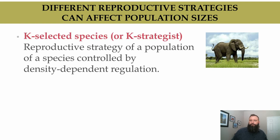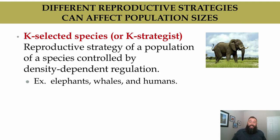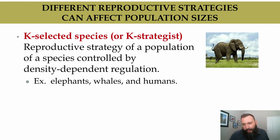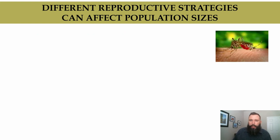Elephants, humans, and whales are called K-selected species, or K-strategists. The letter K refers to carrying capacity. This is a reproductive strategy of a population controlled by density-dependent regulation. We'll see K-selected species oftentimes at K — slowing down their growth rate to be at carrying capacity. Density-dependent regulation from predation, competition, and access to limiting resources is what slows that growth. Larger mammals tend to be K-strategists, though not all mammals necessarily are.